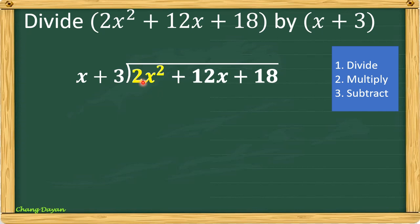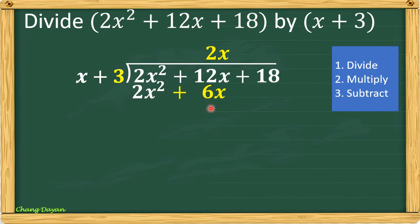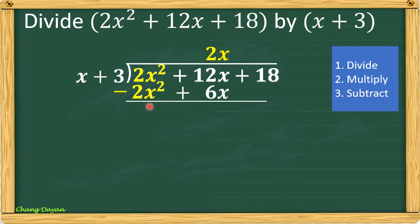Let's divide 2x squared by x — the answer is 2x. Align 2x to 12x. Next, multiply: 2x times x is 2x squared — you just add the exponents since they have the same base. Next, 2x times 3 gives positive 6x.